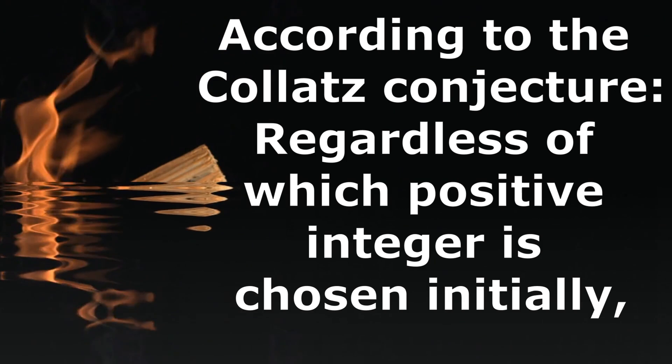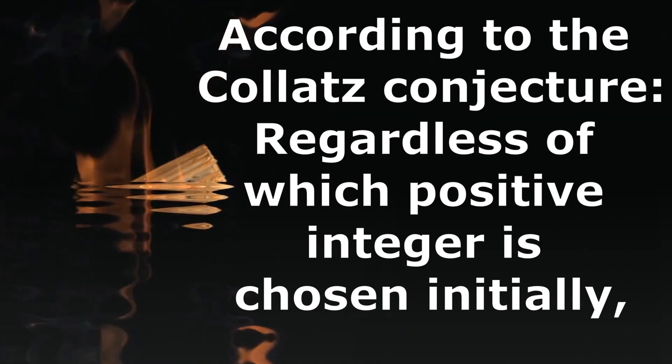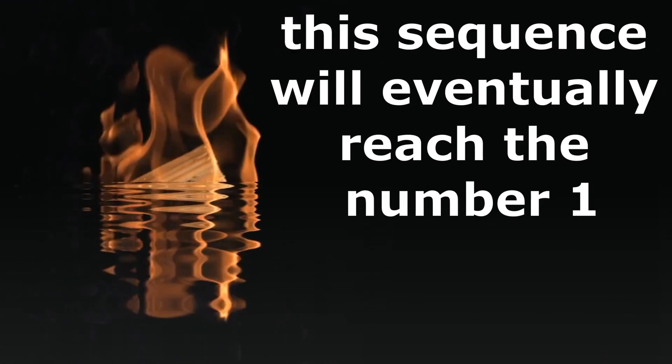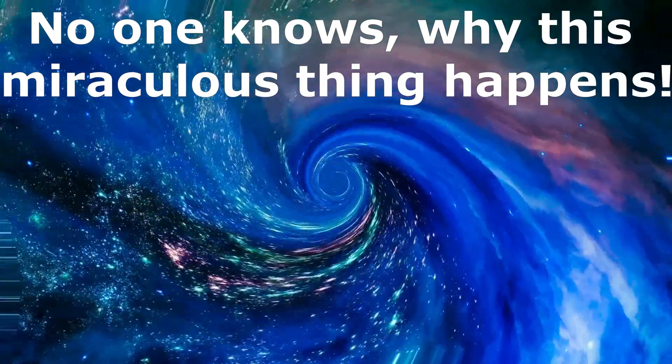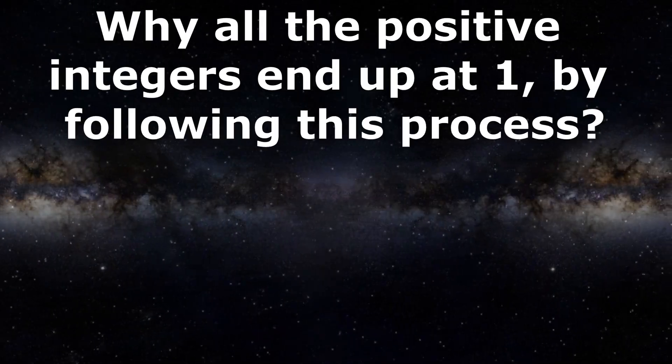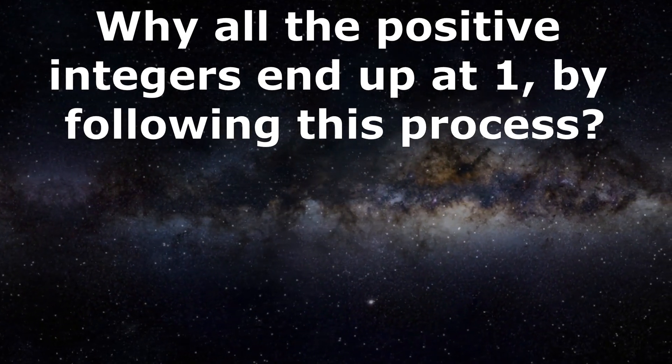Now, according to the Collatz Conjecture, regardless of which positive integer is chosen initially, this sequence will eventually reach the number 1. No one knows why this miraculous thing happens. Why all the positive integers end up at 1 by following this process?